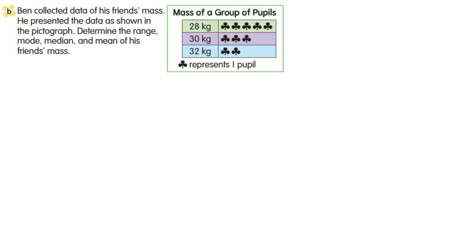Now look at example B. Ben collected data of his friends' mass. He represented the data as shown in the pictograph. Determine the range, mode, median, and mean of his friends' mass. First, let's determine the range. From the pictograph, the highest mass is 32 kilograms and the lowest mass is 28 kilograms. So the range is 32 minus 28, which equals 4 kilograms.